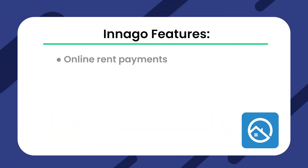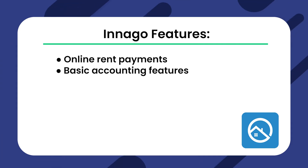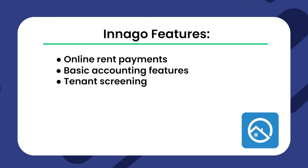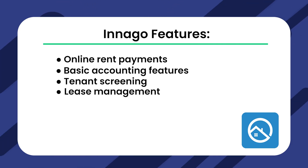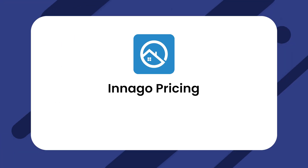Inago is known for its ease of use and mostly free option, making it another good starter option for those new to using software for property management. Inago features include online rent payments, basic accounting features, tenant screening, lease management, maintenance tools, and a tenant portal. The software itself is entirely free, but it comes with some processing and screening fees. All ACH payments cost $2 while debit and credit payments charge 2.75%. Additionally, background checks cost $30 to $35.